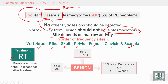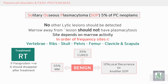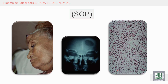Treatment is radiotherapy. Paraprotein is expected to disappear after treatment — this is a benign form. However, 50–55% of cases may convert to multiple myeloma, 35% may be cured, and 10% have local recurrence or develop another solitary osseous plasmacytoma. The radiological X-ray appearance of solitary plasmacytoma in the skull bones is visible here.